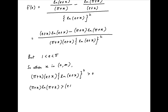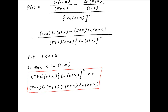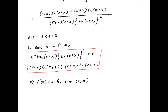Secondly, since π is greater than e, (π+x)·ln(π+x) will be greater than (e+x)·ln(e+x). The first inequality implies that the denominator of f'(x) is positive, and the second implies that the numerator of f'(x) is negative. Therefore f'(x) is negative when x lies in 0 to infinity, which proves that f(x) is a decreasing function in this interval.